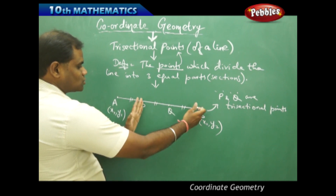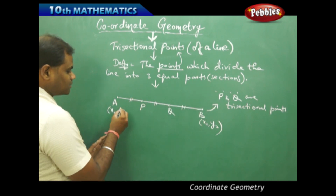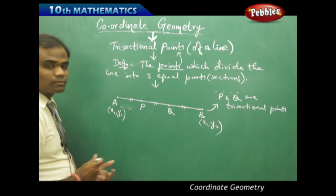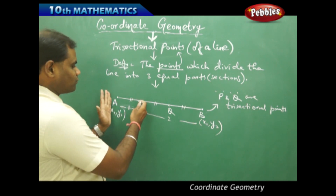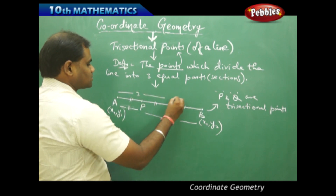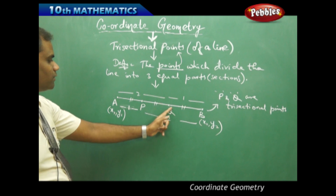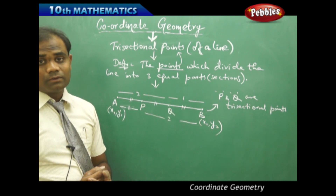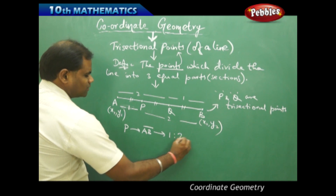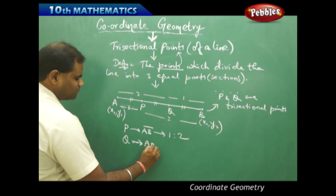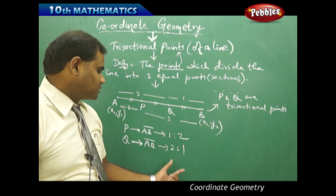Because this is one section and this is two sections — section 1, section 2, and section 3 — P divides in the ratio 1:2. Similarly, Q divides AB in the ratio of two sections to one section. Therefore, P divides AB in the ratio 1:2 and Q divides AB in the ratio 2:1.